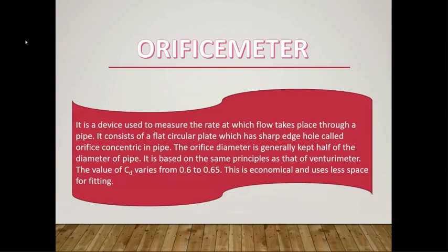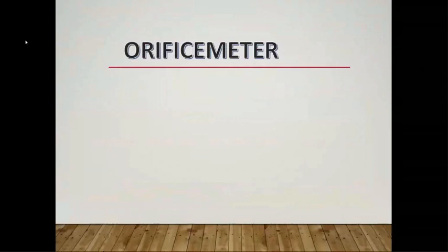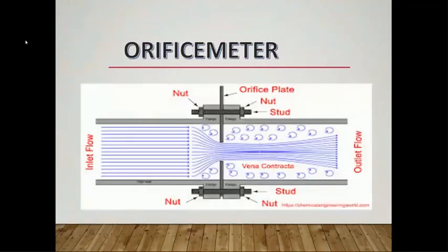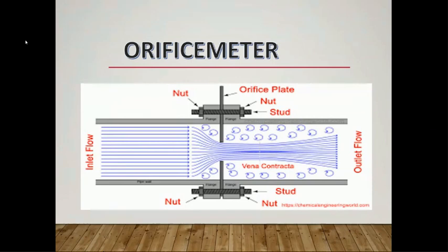The orifice meter is based on the same principle as the venturi meter. The value of Cd, the coefficient of discharge, is the ratio of actual discharge to theoretical discharge from the orifice, and varies from 0.5 to 0.6. It is economical and cheaper than the venturi meter and uses less space for fitting. In the diagram of the orifice meter, there is inlet flow and outlet flow at opposite ends, and the orifice plate at the center.